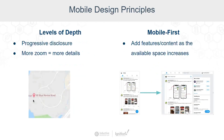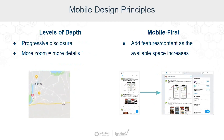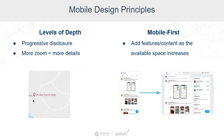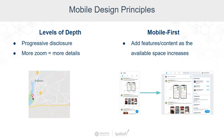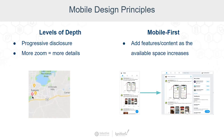You want to progressively provide more and more contextual information to your user as it's needed. A good example of this is a mapping application, as you can see in this animation. As we zoom further and further in, the information presented is more contextual, different, and more specific to the location.